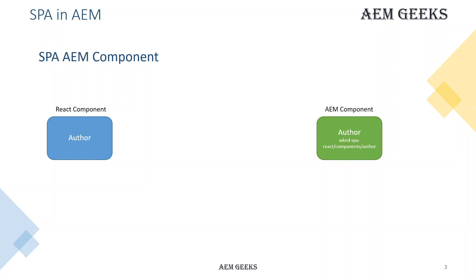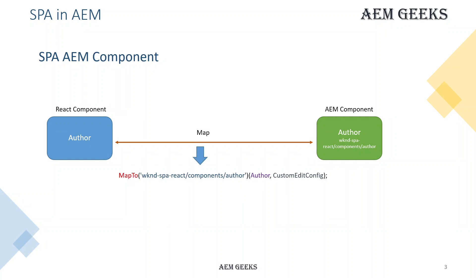Once you have a React component and an AEM component, you map them using a functionality called MapTo. I will explain this in detail with a demo. MapTo has two parts: the first one is the path in CRXDE — the resource type of your component. Let's say I have a component called 'author' and it is under slash components slash author. The other part is the React component, where 'author' is the name of your class.